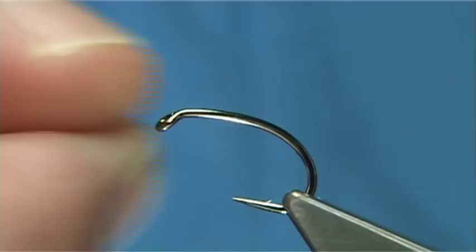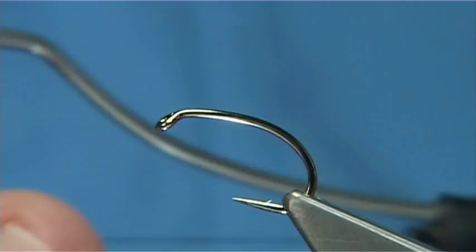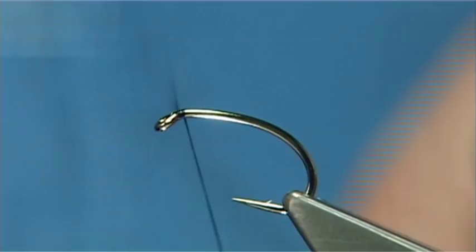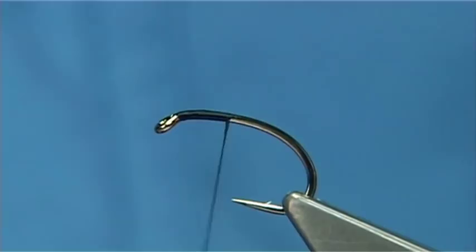To tie the fly I'm using a Kamasan B110 size 10. The thread I'm going to be using is a UTC thread in 17 black. You just simply start at the eye, put down a layer of thread until basically the thread is in line with the point of the hook.